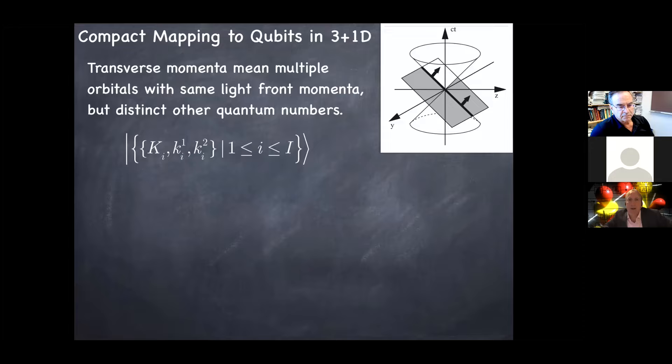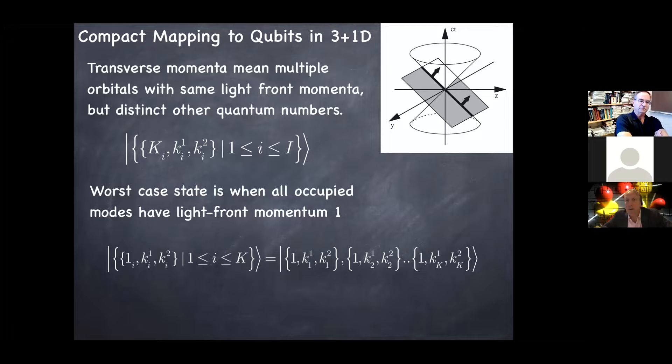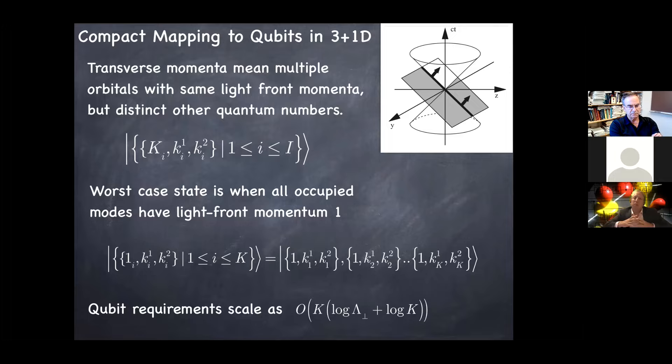All right, so that's 1+1D, you know, the world is 3+1 dimensional. So we want to ask what's the difference between 1+1 and 3+1. The difference is that now you have these transverse directions, the things inside the light front. And so because now particles that carry the same light front momentum can be distinguished by these other momentum variables, you no longer have this worst-case behavior where you're filling each one up one at a time. So in more than one dimension, or with particles that have other quantum numbers, you're going to get a scaling of qubits with k that is linear. And then with some logarithmic dependence on k and on the momentum cutoff in the transverse direction. But still, this is pretty good. So it's still linear in k up to logarithmic factors.